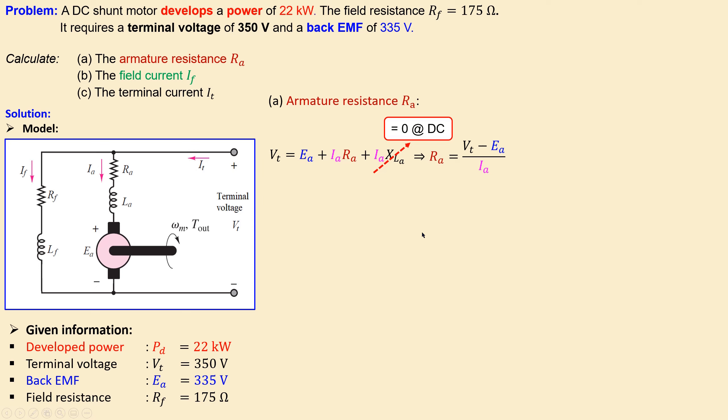Now we can use the given information about the power. The developed power is the product of the back EMF and the armature current. We know the developed power and the back EMF. So we can calculate the armature current directly by using the given information. That will be 65.7 amperes. Now using this expression, we can come to our armature resistance which is 228 milliohms.